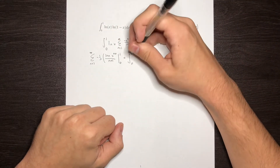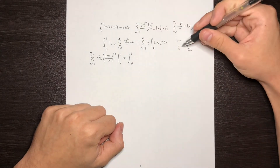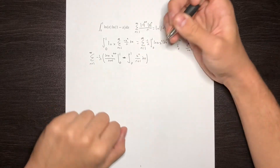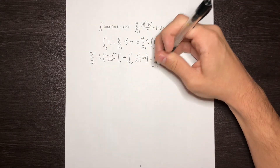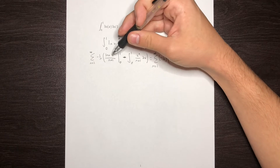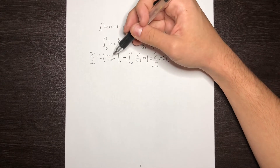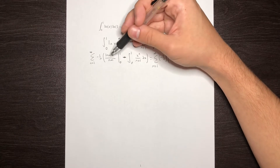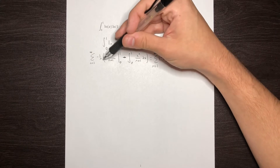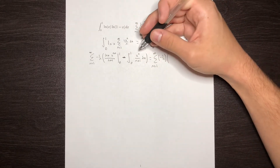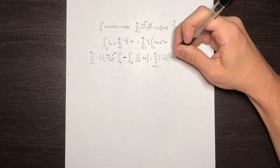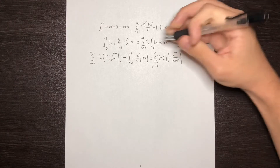Then we have minus the integral from 0 to 1 of x to the n over n plus 1 dx. Now, when we plug in 1, the natural log of 1 is 0, so that boundary term is 0. When we plug in 0, x to the n plus 1 goes to 0 faster than ln(x) goes to negative infinity, so that term also goes to 0. The second term integrates easily to negative x to the n plus 1 over n plus 1 squared, evaluated from 0 to 1.